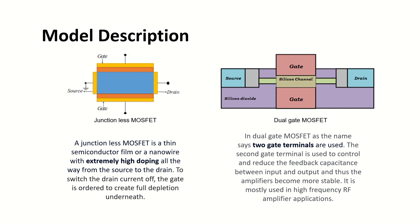By controlling the PN junction, we can get the flow of current. If it is on, it is forward biased; if it is off, it is reverse biased. That is the concept of JFET. In a junctionless FET, in place of the traffic light, we use a double gate.